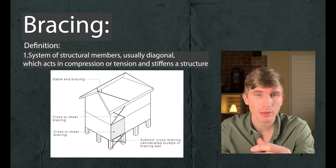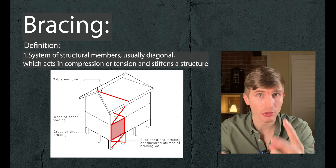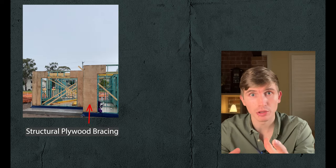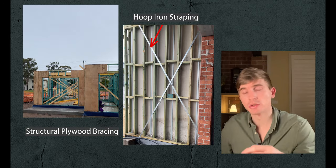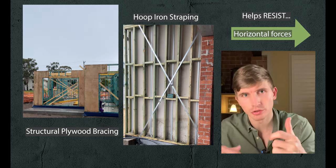With all the framing members assembled we're almost there, but there's one critical thing that we haven't mentioned yet: bracing. Bracing comes in various forms but the two most common are structural plywood and hoop iron strapping, which assist the structure in resisting horizontal forces like strong winds pushing and pulling the building. And that's pretty much it — if you have some alternative names to share or you're an experienced builder with something to add or correct, let me hear about it in the comments below. Thanks for watching.